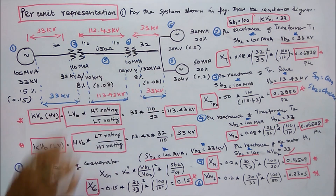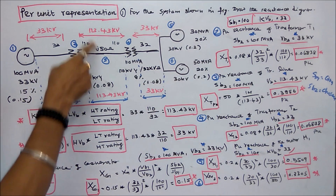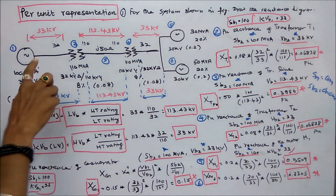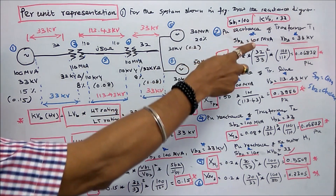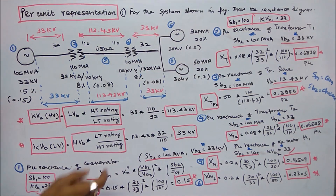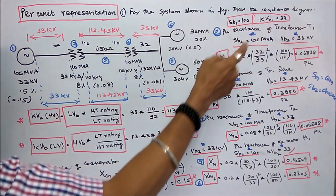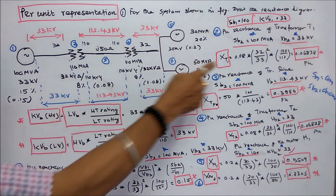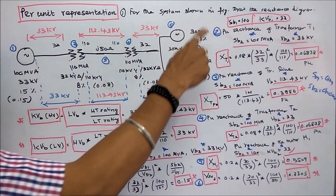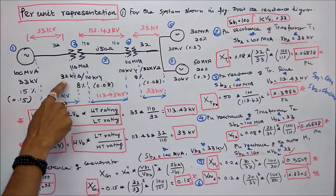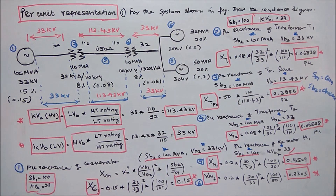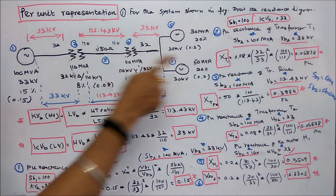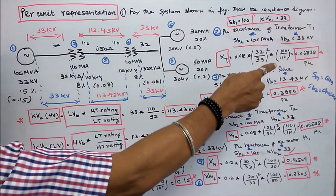The next is transformer T1. SB2 is 100 MVA, VB2 is 33 kV. Per unit reactance Xt1 equals given value 0.08 into (VB1/VB2) squared into (SB2/SB1). VB1 is given as 32, VB2 is 33, so (32/33) squared, times SB2 100 divided by SB1 110. That equals 0.06838.